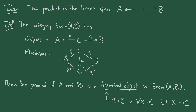Another nice thing is that terminal objects are unique up to unique isomorphism in the simple sense that if you have two terminal objects in the same category, they're isomorphic, and in fact isomorphic in exactly one way. That's pretty easy to prove, and if you know that, you'll see immediately that products — because they're terminal objects — are also unique up to unique isomorphism of spans, meaning there's exactly one isomorphism of spans, one isomorphism between the objects that commutes with the chosen projection morphisms, between those two products.